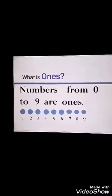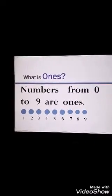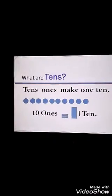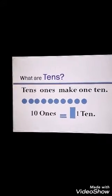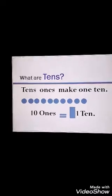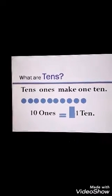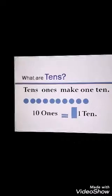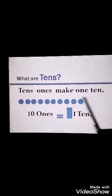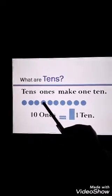And these numbers are called ones. Next come to tens. What are tens? Tens: one ten makes one ten. Ten ones is equal to one ten.